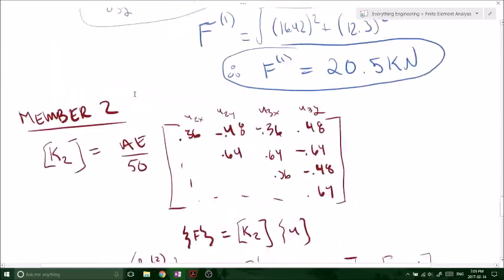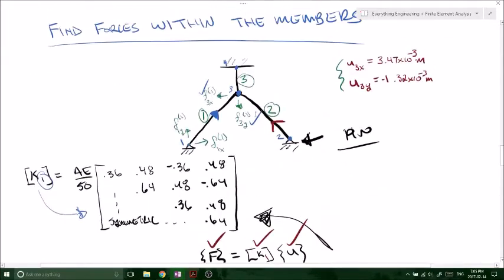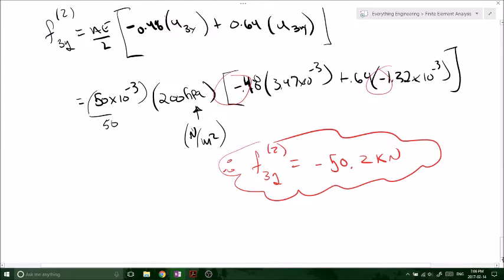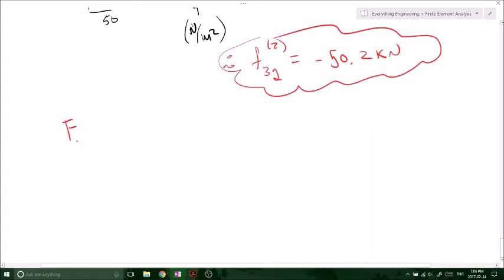So now, looking back at our picture, what have we done? What have we solved for? We looked at F2 of X, or sorry, we've looked at this guy here. So now we've just found F3X due to number 2, and F3Y due to number 2, right? So we've solved for those guys now. So what we need to do, we've got to take the magnitude again, right? So we know that big F, let's go, at number 2.